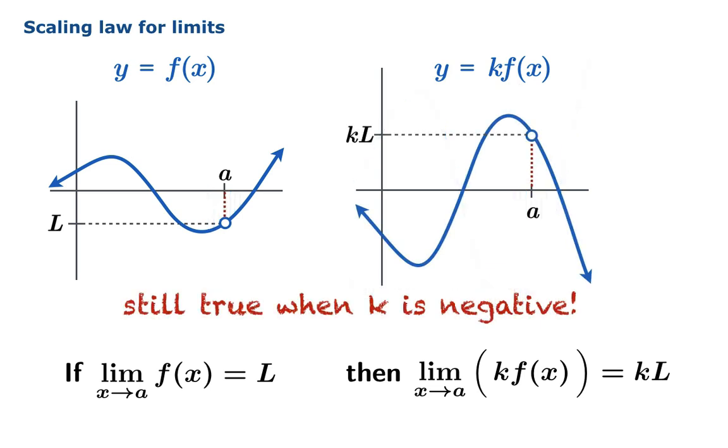And this is still true when k is negative. When you scale by a negative number, the graph flips, so this limit you're looking for will be the opposite sign of the original, but that's okay because k is negative, so kl will also be negative, and it flips as well.